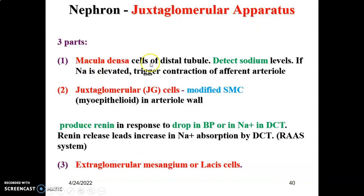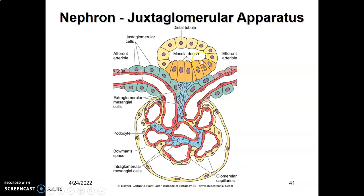To summarize, the juxtaglomerular apparatus contains: macula densa cells of the DCT (the tall cells), juxtaglomerular cells (modified smooth muscle cells of the afferent arteriole that produce renin), and extraglomerular mesangial cells, also called lacis cells. When blood pressure is low or sodium in the DCT is low, macula densa cells signal the juxtaglomerular cells to produce renin, causing vasoconstriction to increase blood pressure and aldosterone production to increase sodium reabsorption, thereby raising blood pressure.